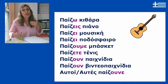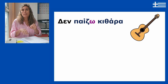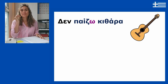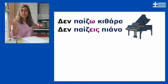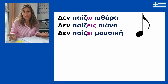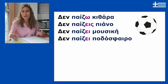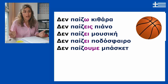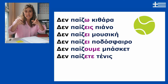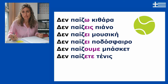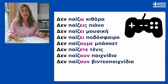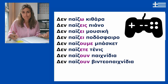The negative form: Δεν παίζω κιθάρα. Εσύ δεν παίζεις πιάνο. Αυτός δεν παίζει μουσική. Αυτός δεν παίζει ποδόσφαιρο. Εμείς δεν παίζουμε μπάσκετ. Εσείς δεν παίζετε τένις. Αυτοί δεν παίζουν παιχνίδια. Αυτές δεν παίζουν βιδιοπαιχνίδια.